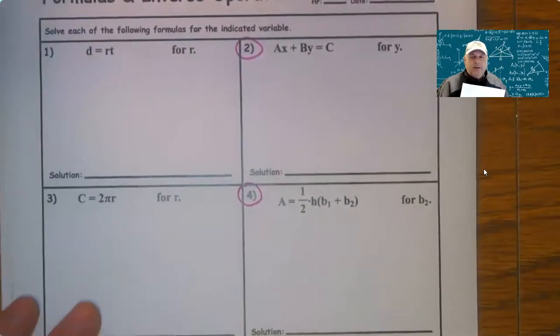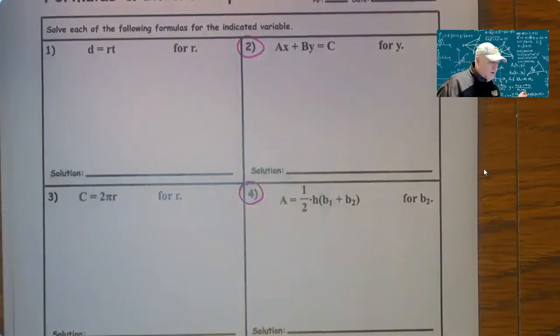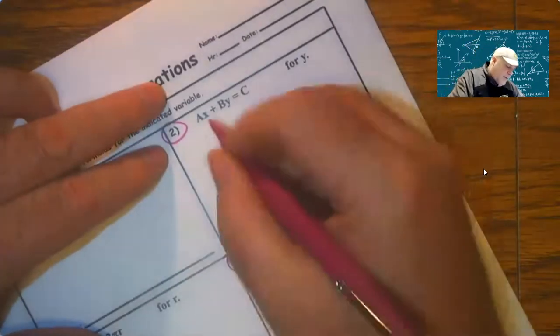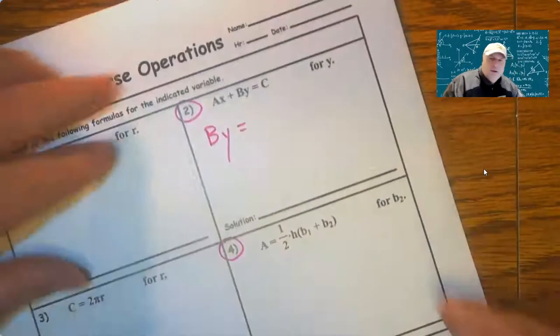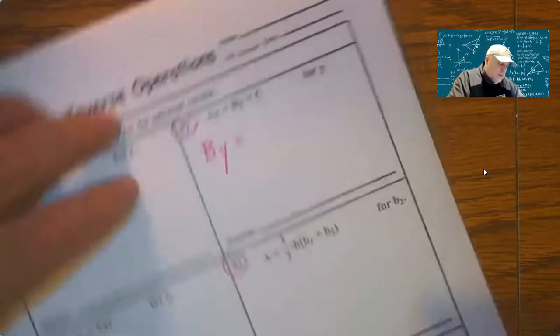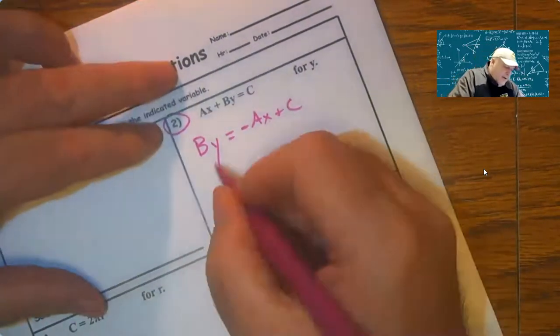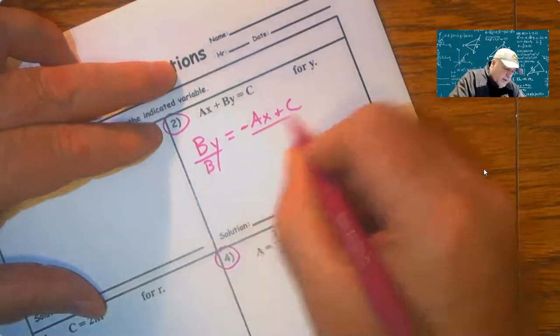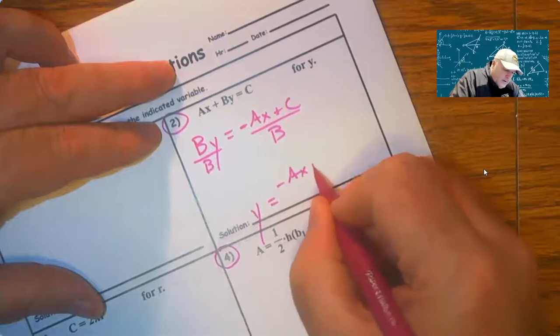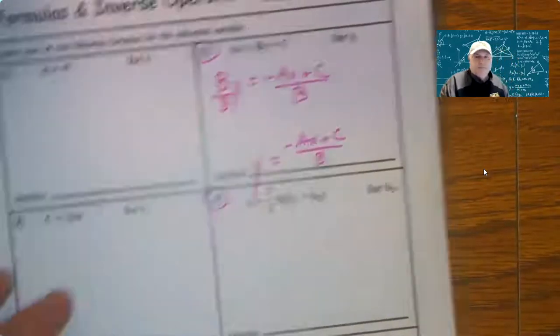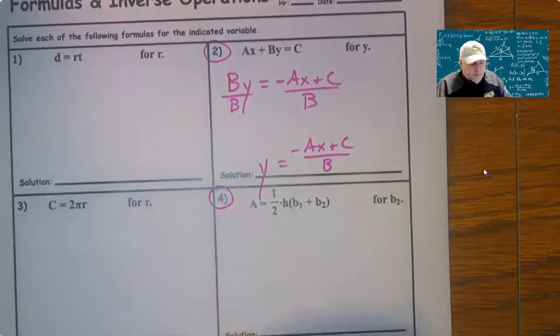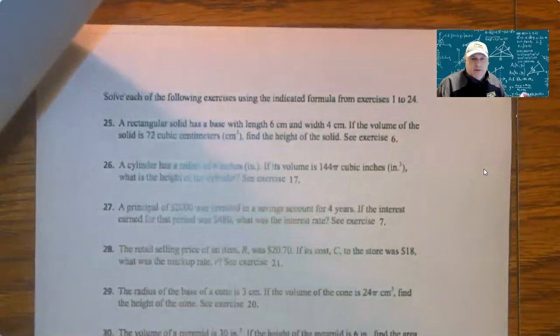How this works, so you follow the steps I just laid out. Problem two: can we multiply to eliminate any parentheses? We cannot. Can we eliminate denominators? No denominators to eliminate. Step three: I want to isolate the term that contains y alone on one side. What does by equal? You subtract ax, so negative ax plus C. And now to isolate y you divide everything by whatever y is multiplied by.